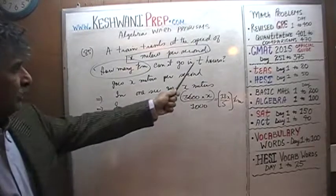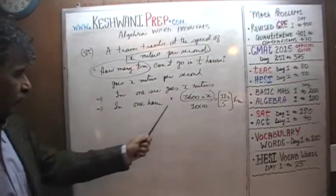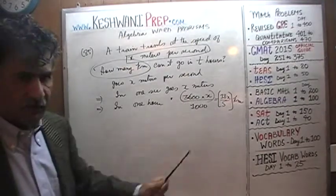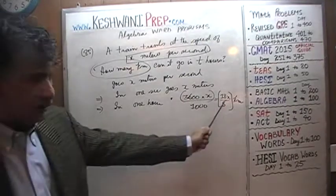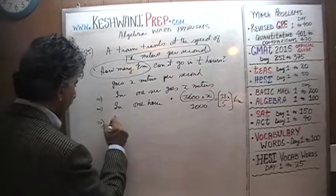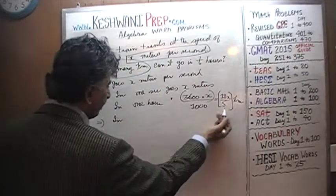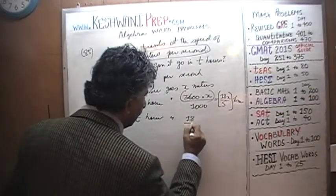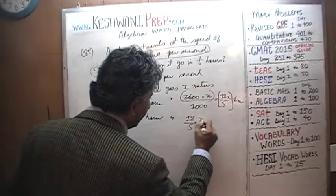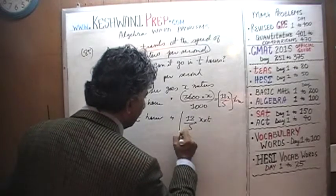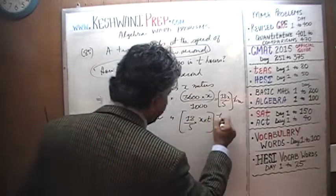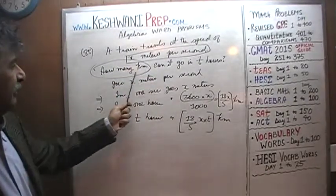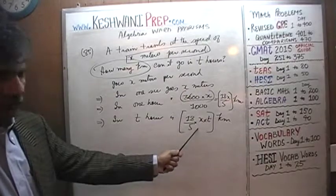We are not going for one hour — we are going for t hours. If in one hour it goes this much distance, then in two hours it goes twice as much, in five hours five times as much, and in t hours it goes 18 over 5 times x times t kilometers. A train travels x meters per second — how many kilometers will it go in t hours? The answer is 18/5 · xt kilometers.